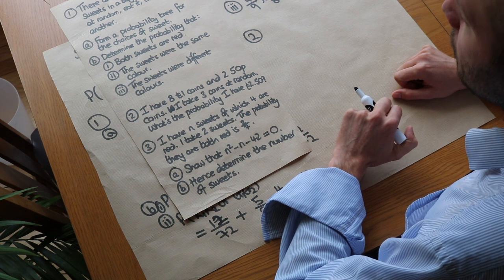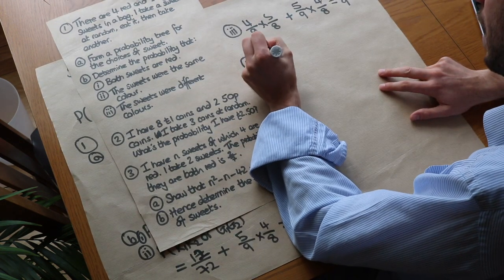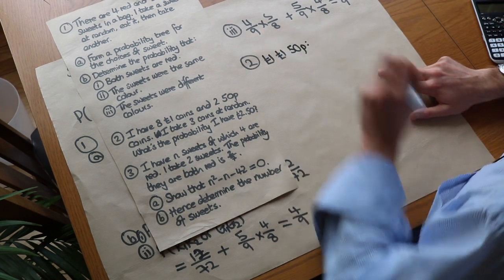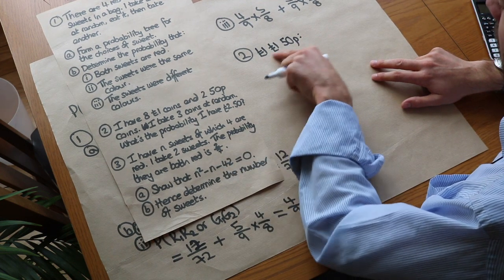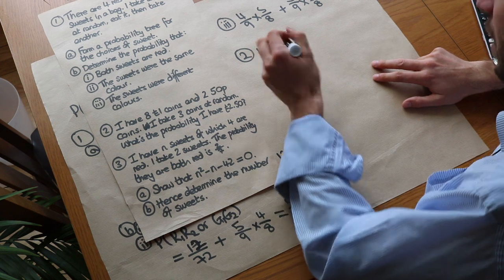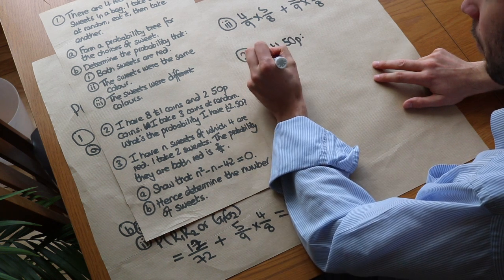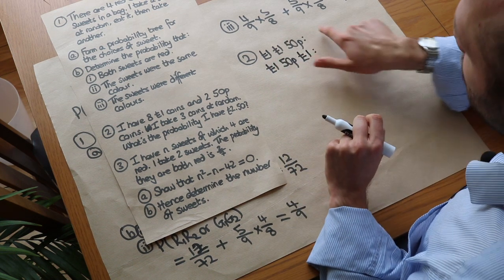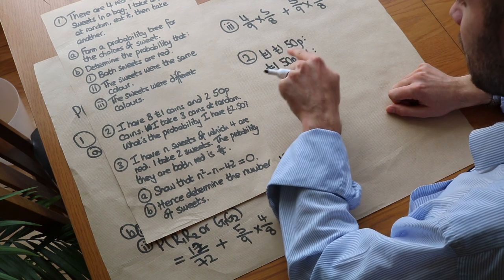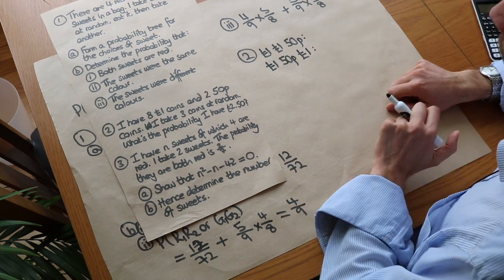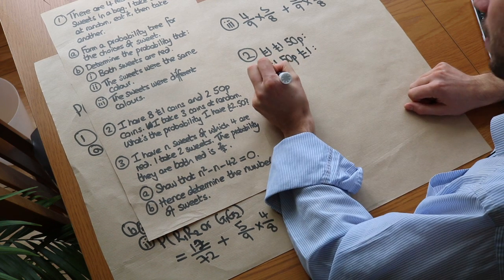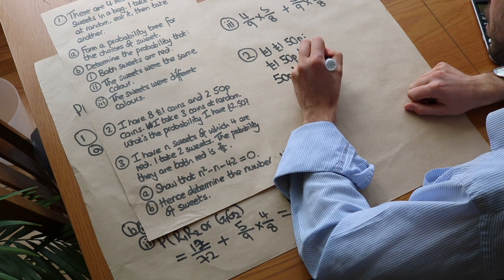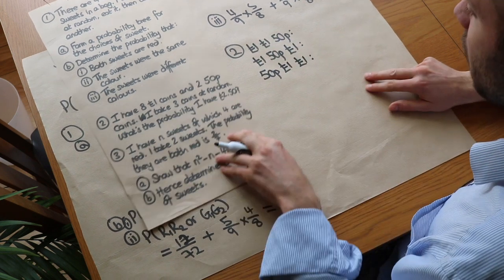Think of all the ways to pick three coins totalling £2.50. The possibilities are: £1, £1, 50p; or £1, 50p, £1; or 50p, £1, £1. Notice we're concerned about the order — what was the first, second, and third coin picked.